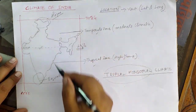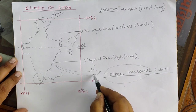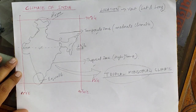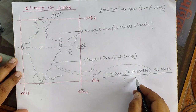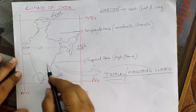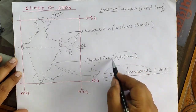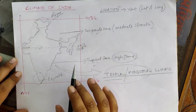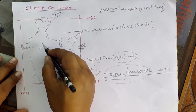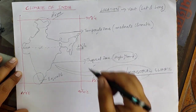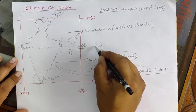We have different types of climatic conditions in our country, but overall the climate is termed as tropical monsoonal. It is tropical because the southern part is already falling in the tropical zone with high temperature, and the northern part also receives high temperature for almost eight months of the year because of the apparent movement of the sun.